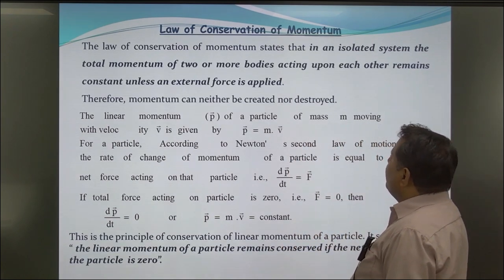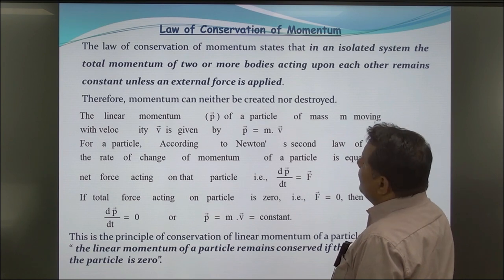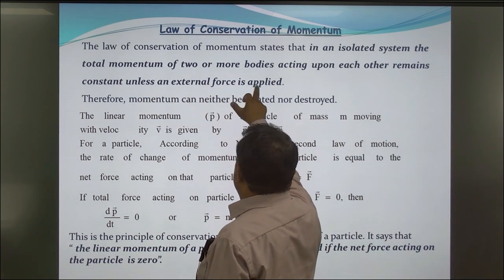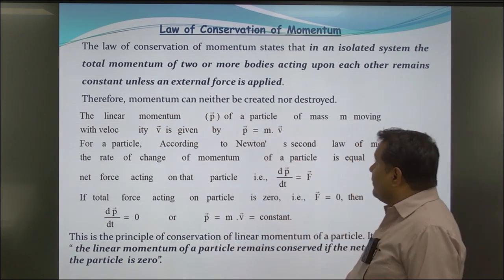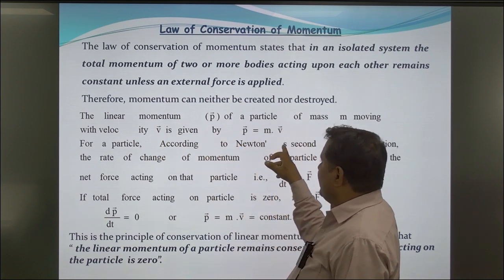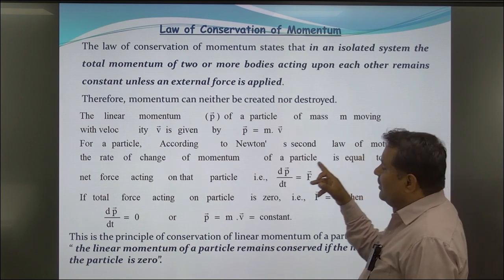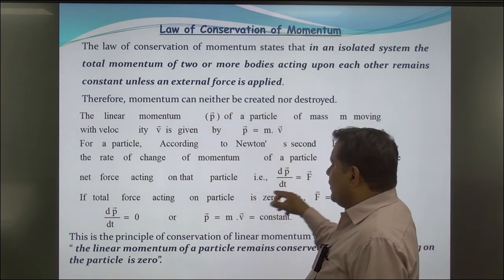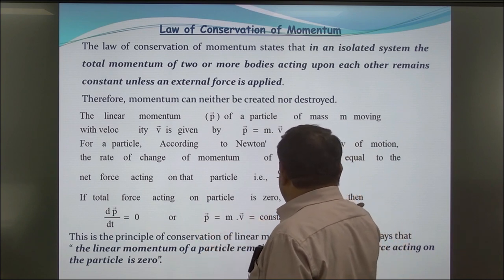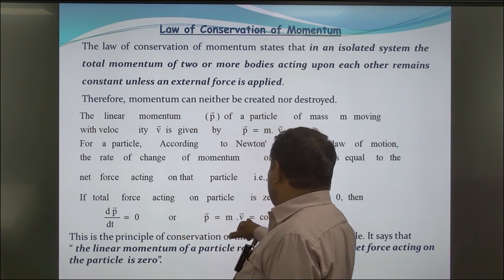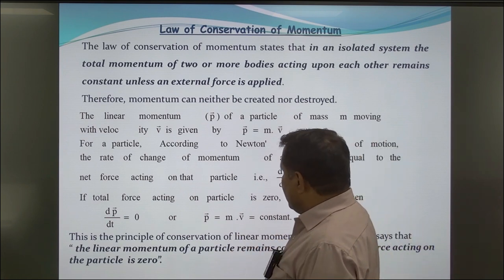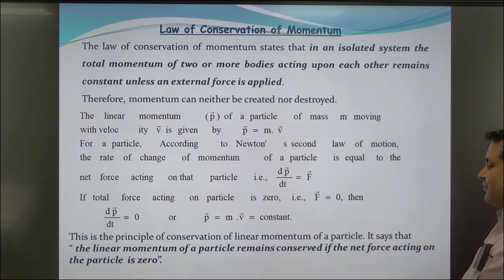Law of Conservation of Momentum: The law states that in an isolated system, the total momentum of two or more bodies acting upon each other remains constant unless an external force is applied. Therefore, momentum can neither be created nor destroyed. The linear momentum P of a particle moving with velocity v is given by P = mv. According to Newton's second law, the rate of change of momentum equals the net force: dp/dt = F. If the net force acting on the particle is zero (F = 0), then dp/dt = 0, so P = mv = constant. This is the principle of conservation of linear momentum.